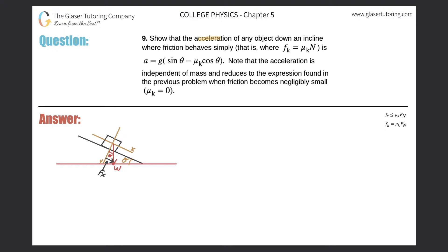Number nine: Show that the acceleration of any object down an incline where friction behaves simply, that is where f_k equals mu_k times N, equals this thing. Note that the acceleration is independent of the mass and reduces to the expression found in the previous problem when friction becomes negligibly small.